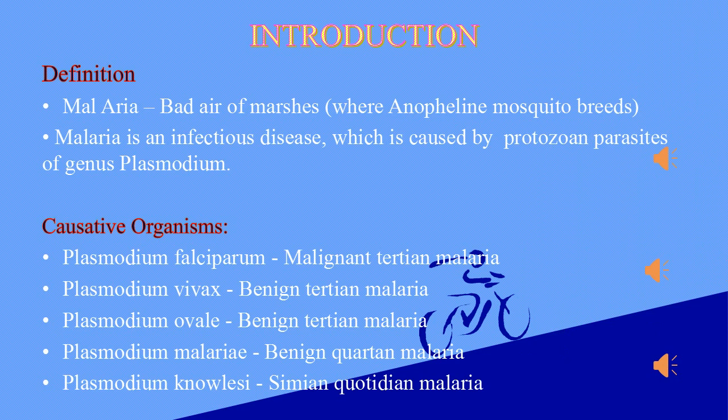There are five causative organisms. First is Plasmodium falciparum. Second is Plasmodium vivax. Third is Plasmodium ovale. Fourth is Plasmodium malariae. And last is Plasmodium knowlesi.